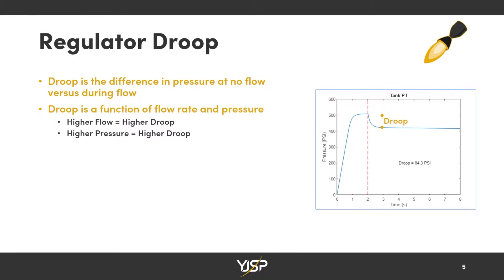Part of regulators — and some of the interesting phenomenon you see with them — is called droop. Droop is the difference in tank pressure at steady state versus tank pressure during a flow, and you can see this difference shown on the plot. Essentially, droop is a function of both the tank pressure and the flow rate through the regulator, and higher flow and higher pressure both mean a higher droop.